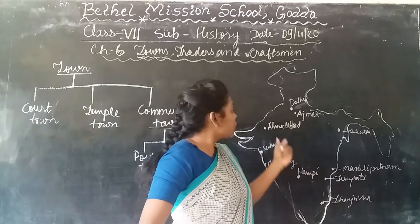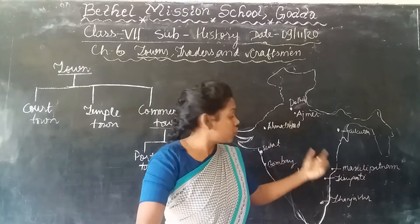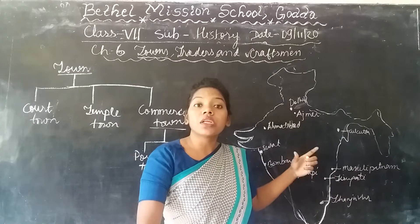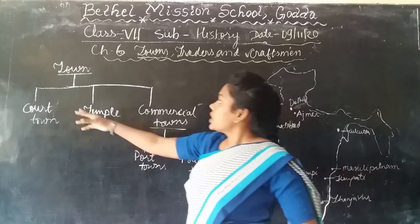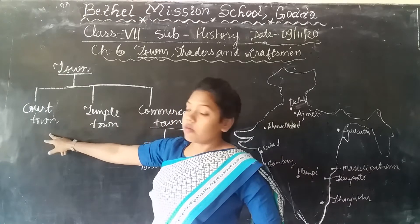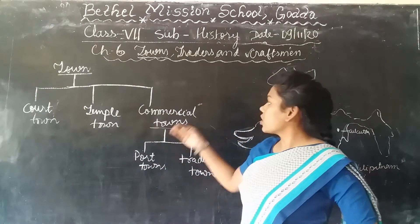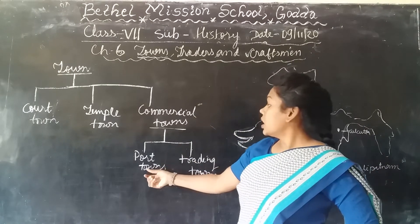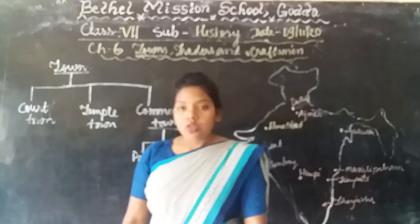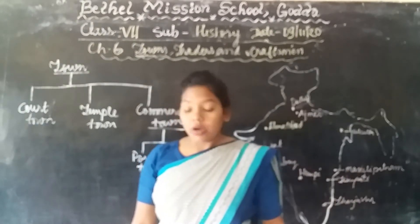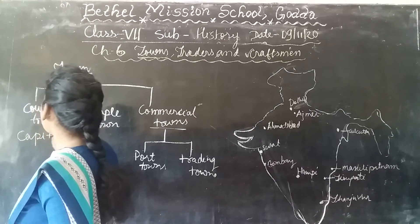During this period, different types of towns developed in the medieval period. You can see there were different types of towns: the port town, the temple town, and the commercial town. Within the commercial town there are two types — the port town and the trading town. The port town is also called the capital town.